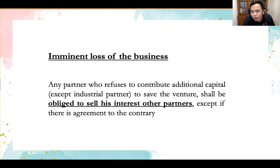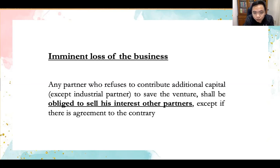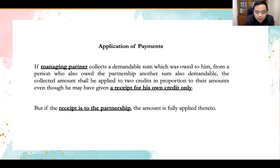In case of imminent loss of the business, the partnership may require the partners to make additional contributions. All capitalist partners must contribute additionally to prevent the loss. The industrial partner is excepted. If a capitalist partner refuses to make additional contributions, he shall be obliged to sell his interest to the other partners.